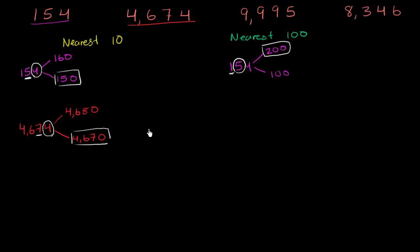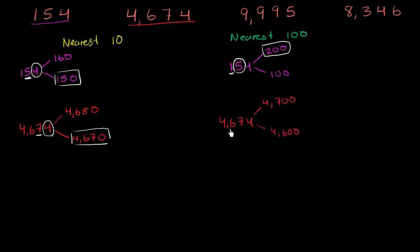Now let's round the same number, 4,674, to the nearest hundred. The multiple of 100 below this is 4,600, and the multiple of 100 above this is 4,700. When rounding to the nearest hundred, we look at the tens place. The tens place is five or greater, so we round up to 4,700.